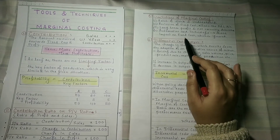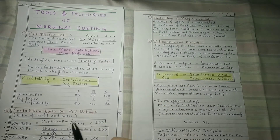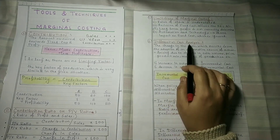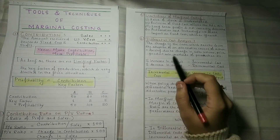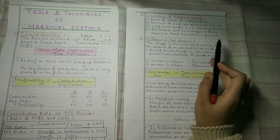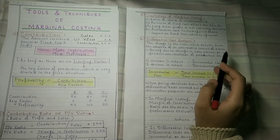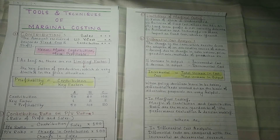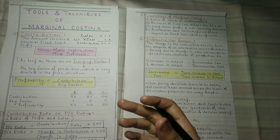The sixth topic of today is Differential Cost Analysis. What is differential cost? It is the change in cost which results from the adoption of an alternative course of action. If we have a particular course of action in our business and we are changing it, how will our cost change because of that?